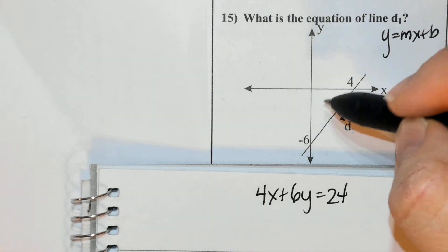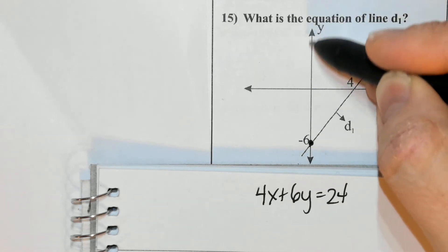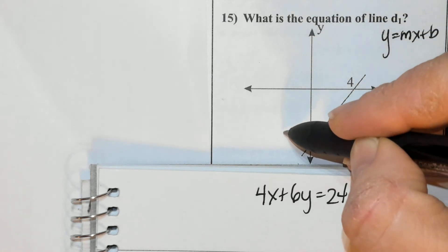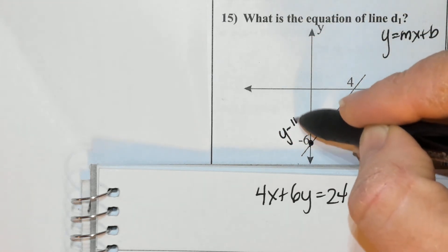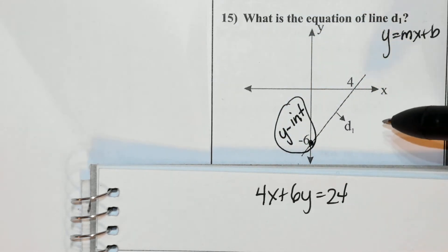When I look at this problem, I can see that the y-intercept, or the point on the line that crosses the y-axis, is negative 6. I abbreviate y-intercept as such, and so it is negative 6.